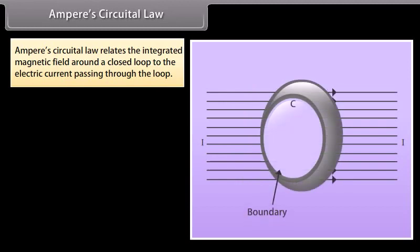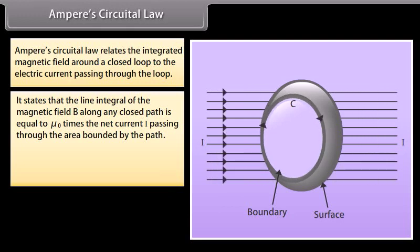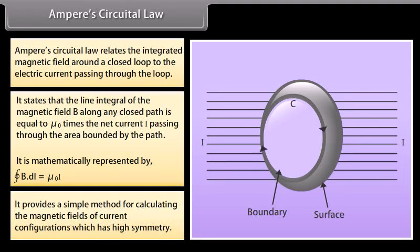Ampere's Circuital Law relates the integrated magnetic field around a closed loop to the electric current passing through the loop. It states that the line integral of the magnetic field B along any closed path is equal to mu_0 times the net current I passing through the area bounded by the path. It is mathematically represented as: closed integral of B dot dL is equal to mu_0 I. It provides a simple method for calculating the magnetic fields of current configurations which have high symmetry.